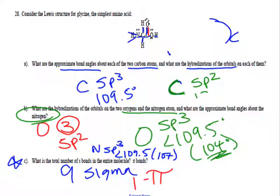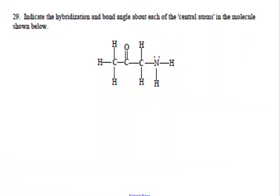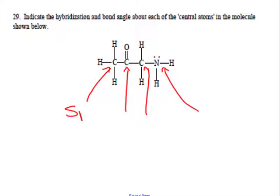A common problem is just to count sigma and pi bonds. For the hybridizations in this last structure: four areas is sp3, three areas is sp2, four areas is sp3, four areas is sp3. And that, in a nutshell, is hybridization.